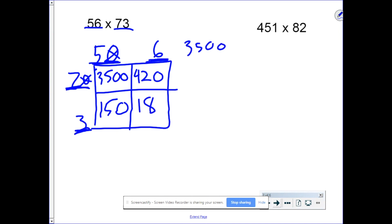3,500 plus 420 plus 150 plus 18. 3,500, 420, 150, 18. 8, 8, 10, and 4. So the answer is 4,088.